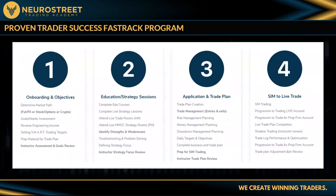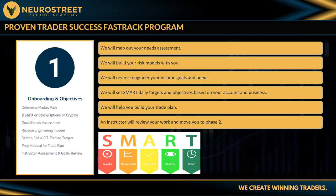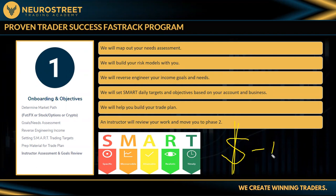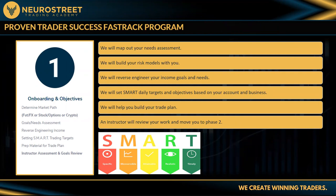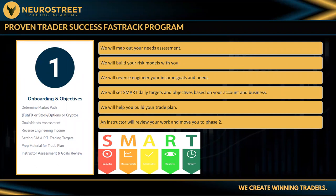We have a four-step process to take you from break-even or losing trader to consistent profitability. Step one: map out how much you need to make, what markets you'll trade, and more importantly, what you're struggling with. Everybody's different — we'll go through your biggest issues: are you over-leveraging, over-trading? We identify those specific problems first.